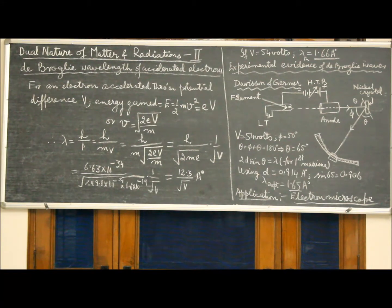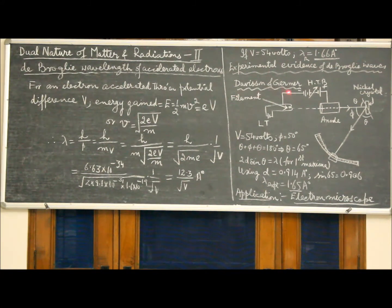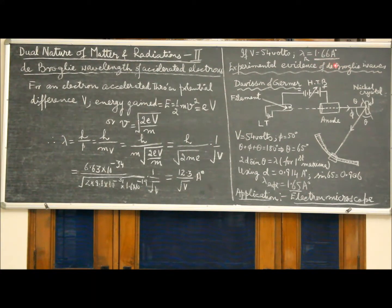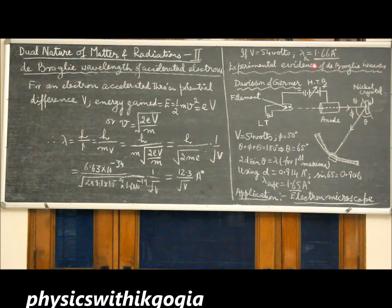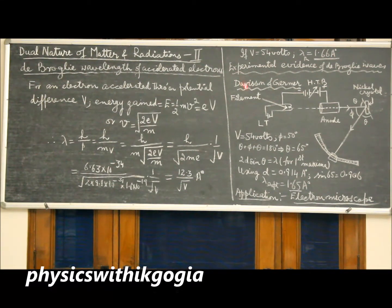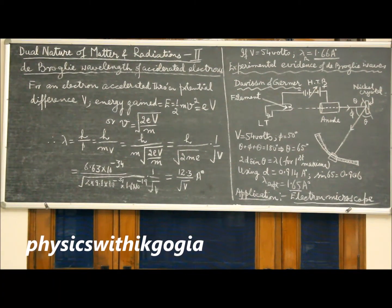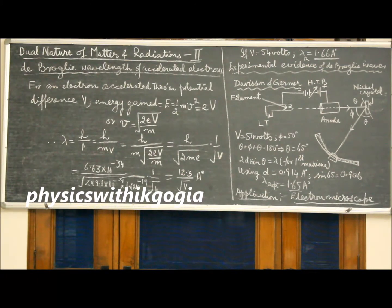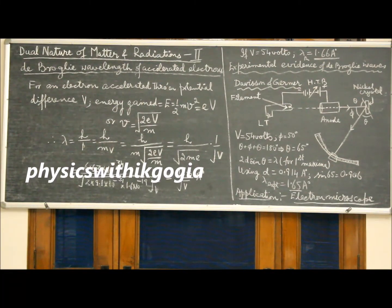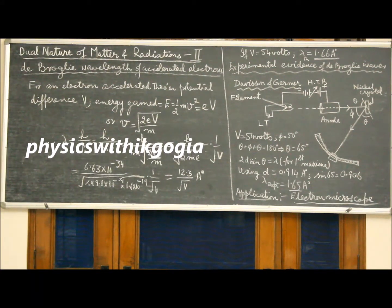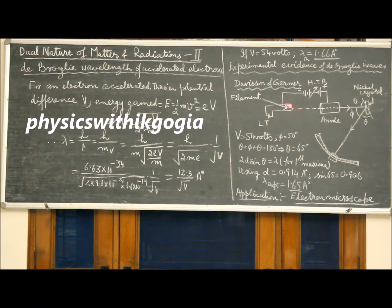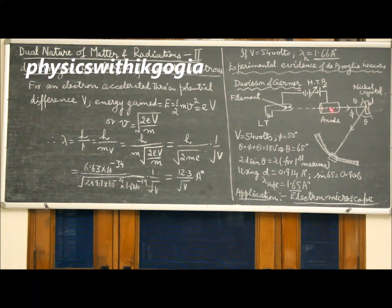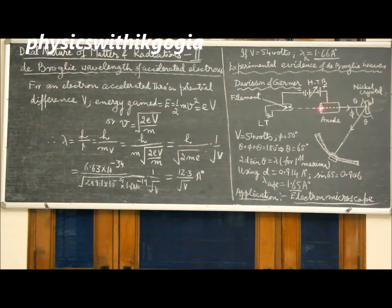Now to verify the hypothesis, Davison and Germer conducted an experiment. Since the wavelength is very small as compared to light, ordinary diffraction slits are not possible to be made. So Davison and Germer in their experiment made use of a nickel crystal. We know that in metals the atoms form well-defined arrangement and hence there are well-defined planes of atoms. The gap between the planes act as very narrow slits. In Davison and Germer experimental setup, we have a filament heated by a low tension battery.